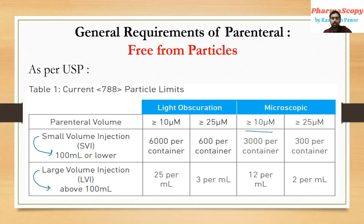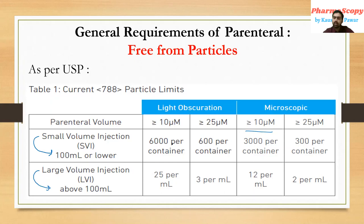Every product should comply with this particle range. A simple trick to remember: the light obstruction limit is twice that of the microscopy limit. For SVI: microscopy gives 3,000 and 300; light obstruction gives 6,000 and 600. Similarly for LVI: microscopy gives 2 and 12, light obstruction gives 3 and 25.